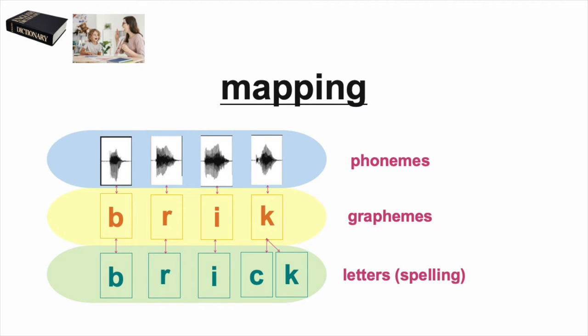Here is a visual representation of what we mean by mapping phonemes onto graphemes. On the top row, you see sound wave patterns for each phoneme in the word brick. Then in the second row, there is a grapheme connected to each of those phonemes. If we spell the word brick phonetically, this is what it looks like.